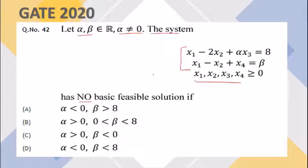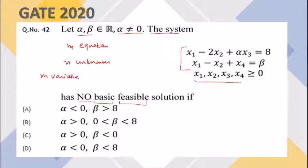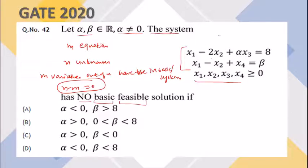First, let's be clear on the meaning of basic feasible solution. A basic solution means that given a system of m equations and n unknowns, only m variables are kept in the basis. Here we have four variables x1, x2, x3, and x4, and we keep only two in the system at a time, putting the other two equal to zero. The number of possible basic solutions is C(4,2) = 6.